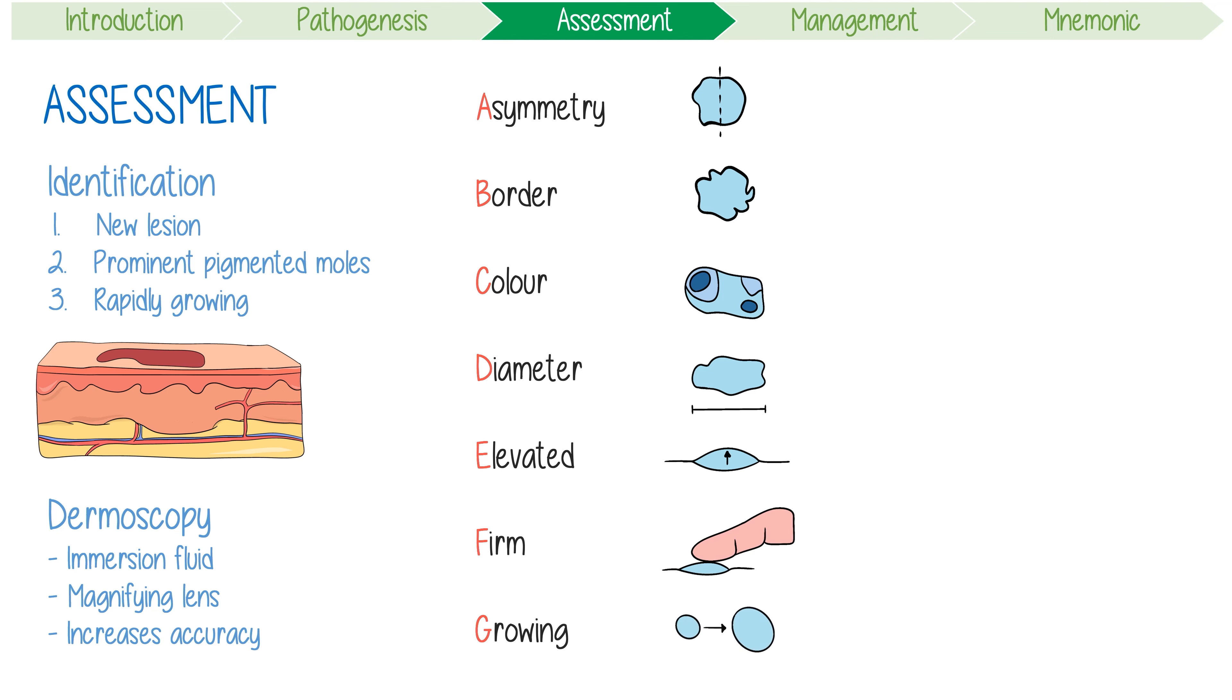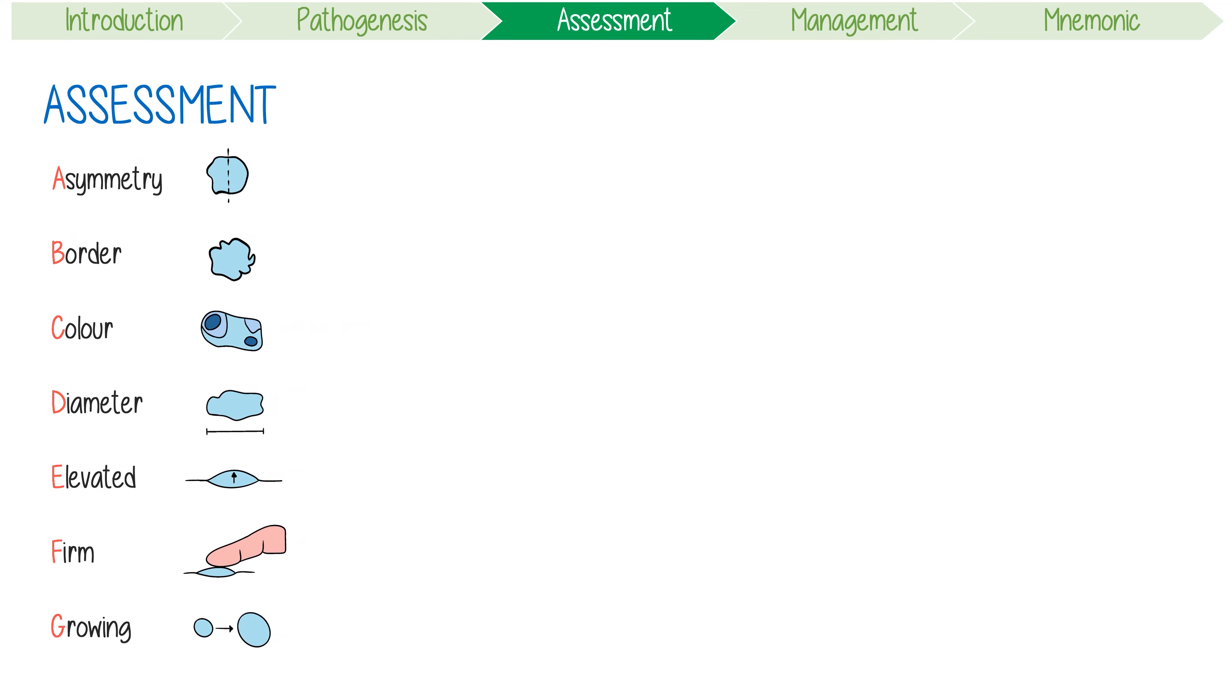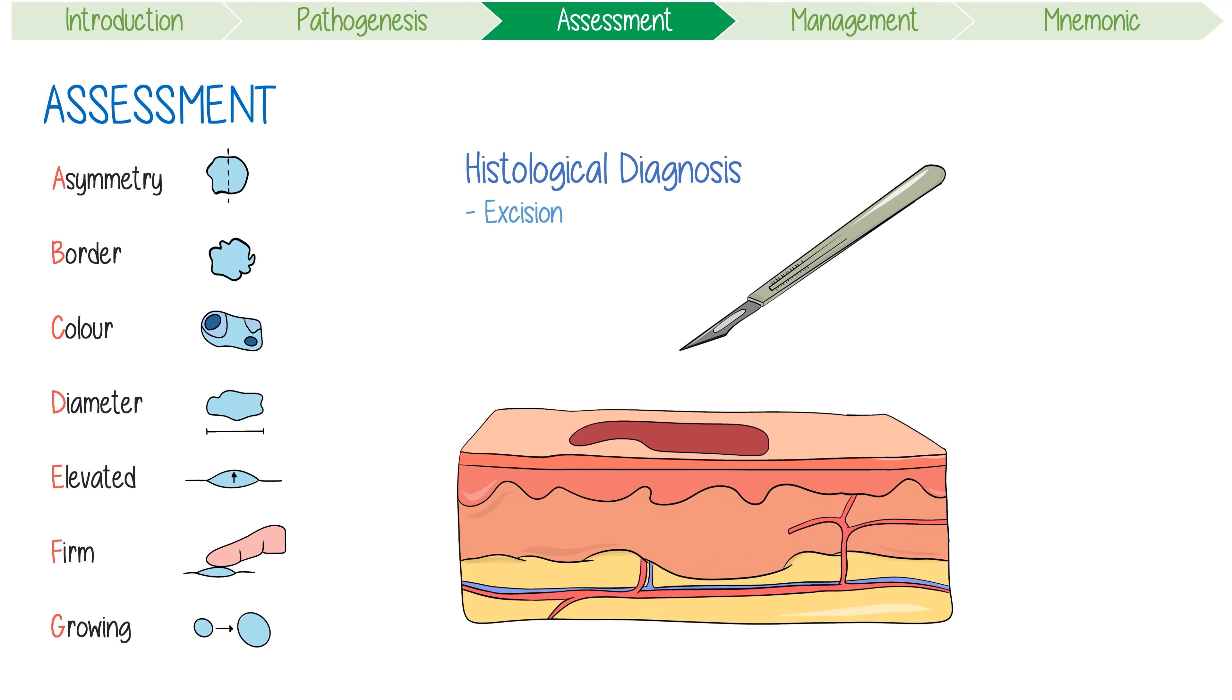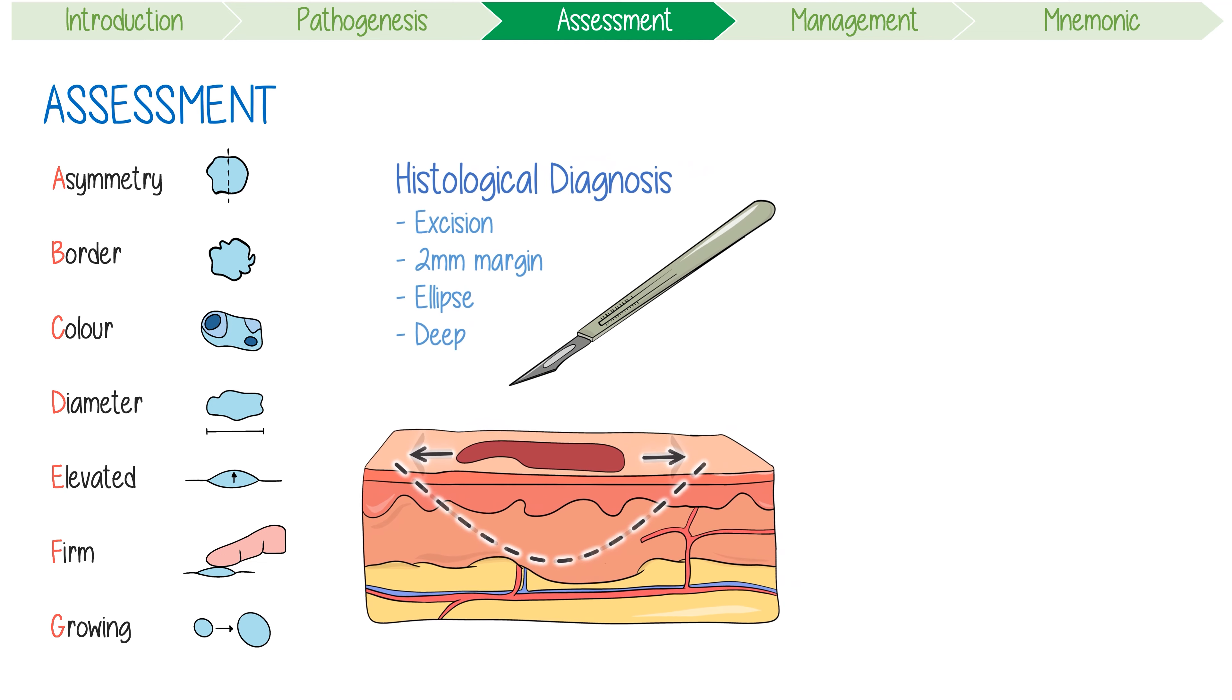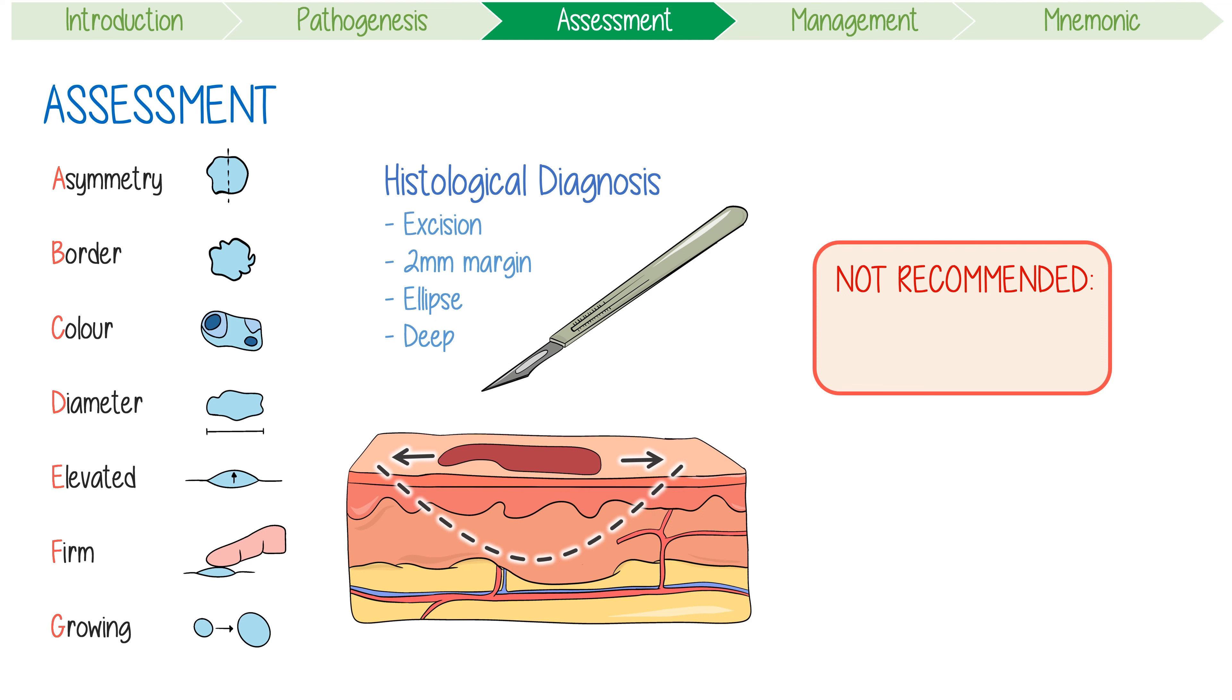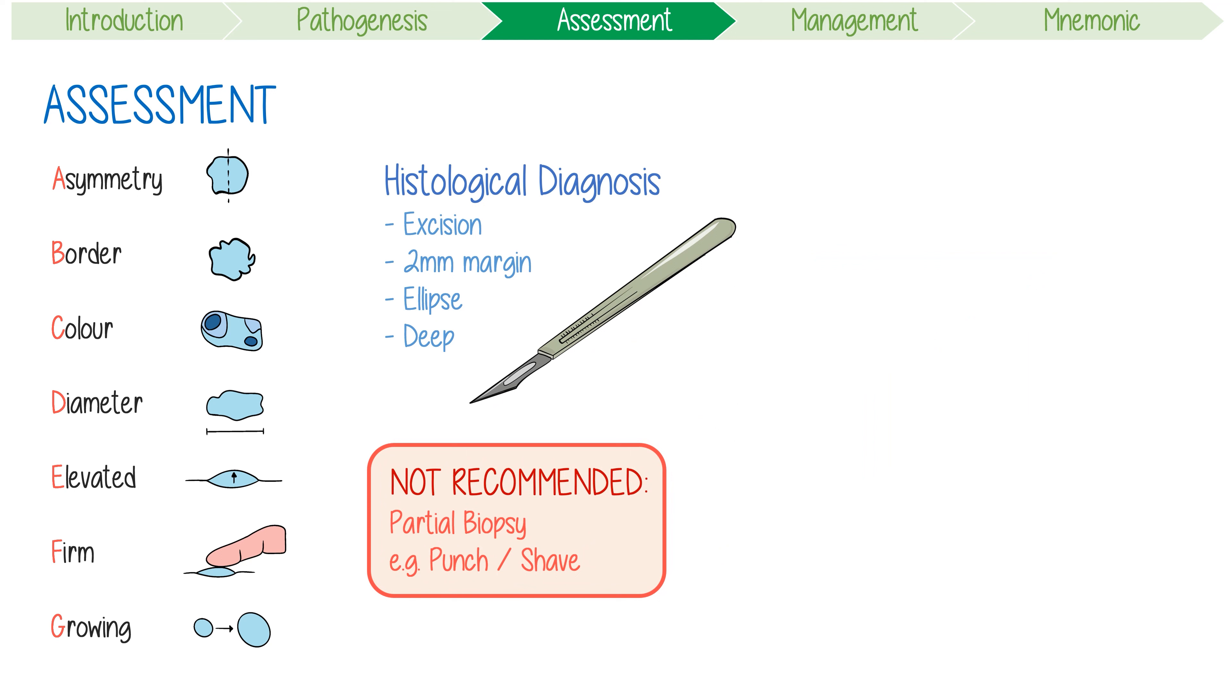The next step is histological diagnosis by excision. The initial cut should be done with a two millimeter margin, preferably an ellipse with a deep margin into the subcutaneous fat. It is not recommended to do a partial biopsy in the form of a punch or shave biopsy.